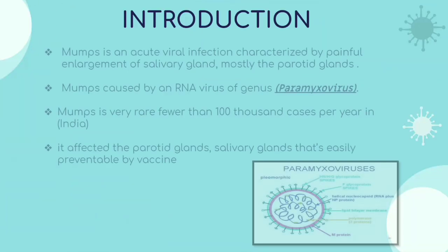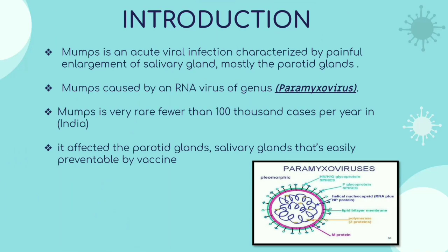Starting with an introduction: Mumps is an acute viral infection characterized by painful enlargement of salivary glands, mostly the parotid glands. Mumps is caused by an RNA virus of the genus paramyxovirus. Mumps is very rare — fewer than 100,000 cases per year in India. It affects the parotid and salivary glands and is easily preventable by vaccination. Here in the diagram we have a paramyxovirus.